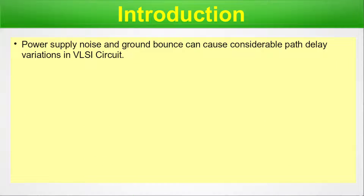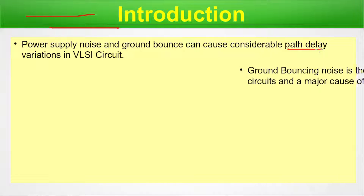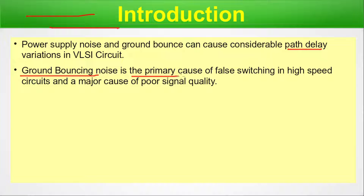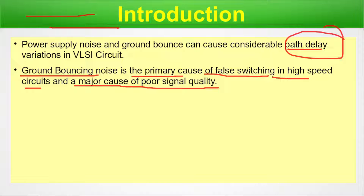Introduction. Power supply noise and ground bounce can cause considerable path delay variation in VLSI circuits. Generally we have two lines — VDD and ground — in any VLSI circuit. Noise in either can cause path delay, affecting timing and chip performance. Ground bouncing noise is the primary cause of false switching in high-speed circuits and a major cause of poor signal quality.